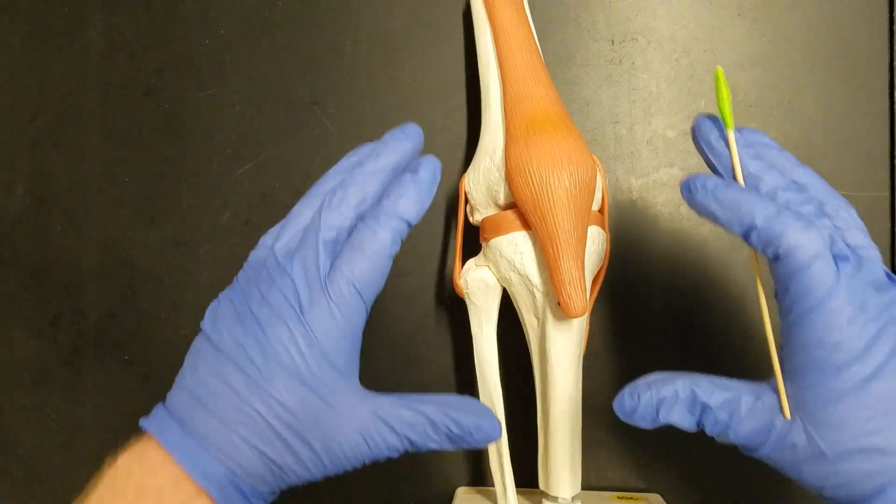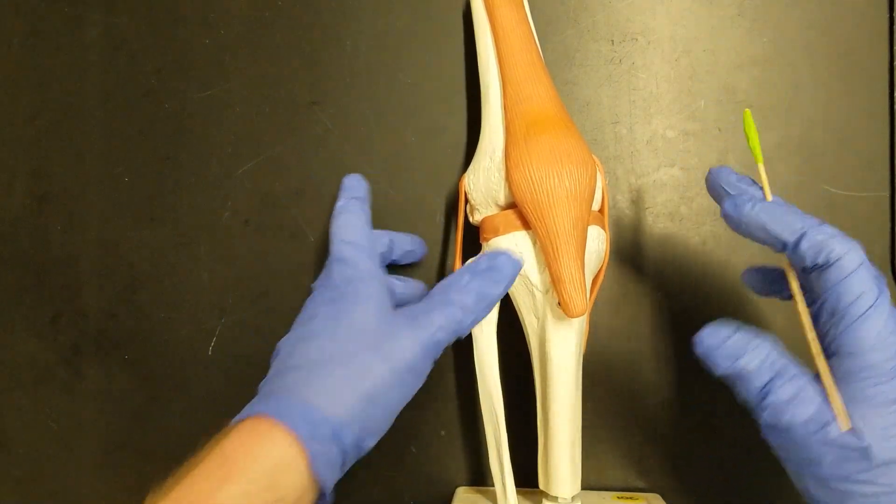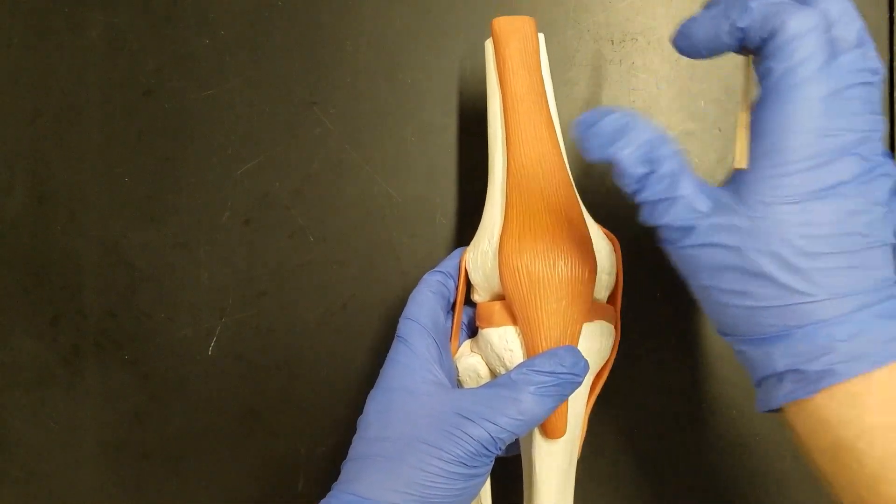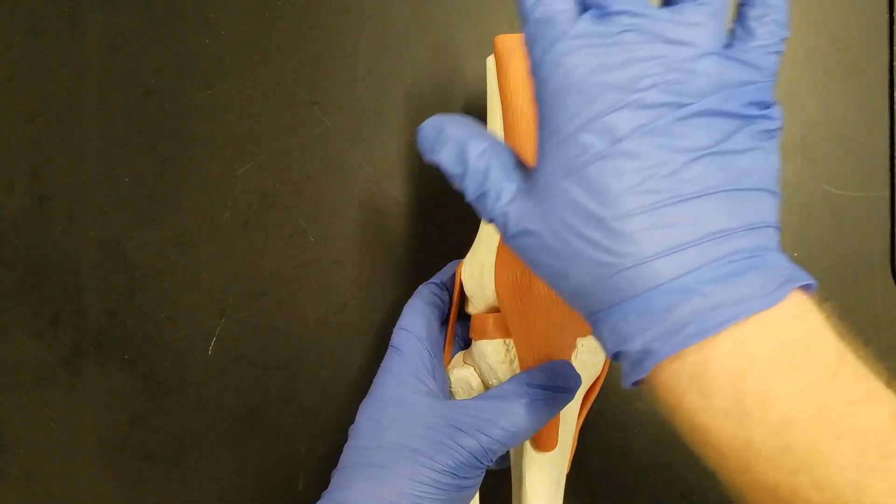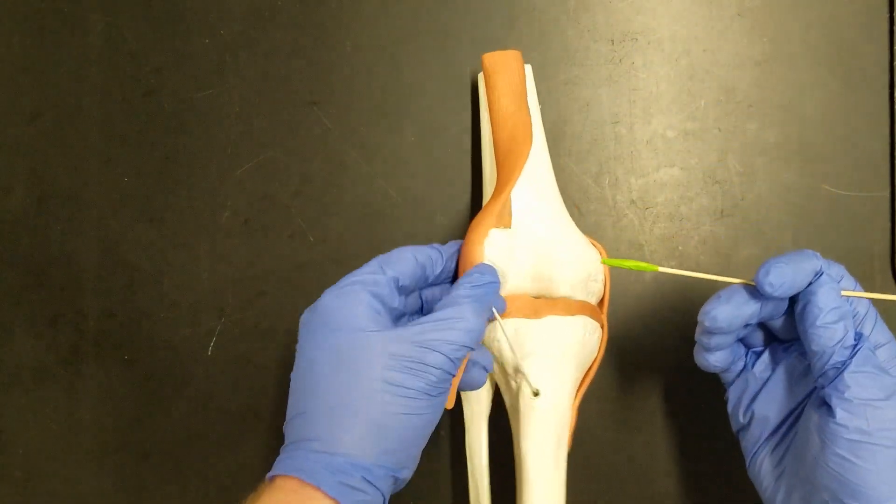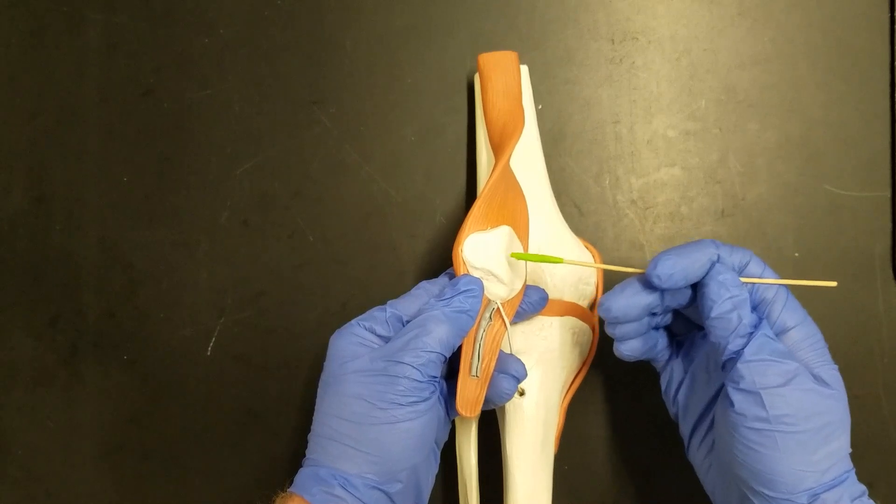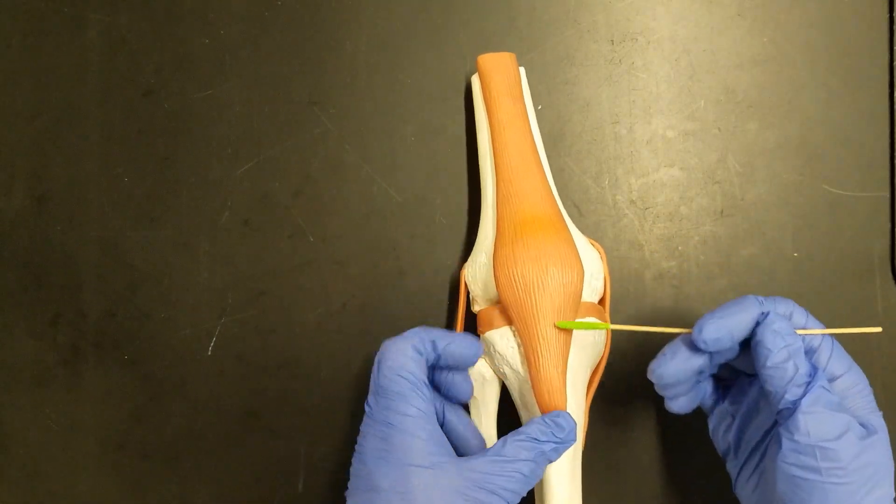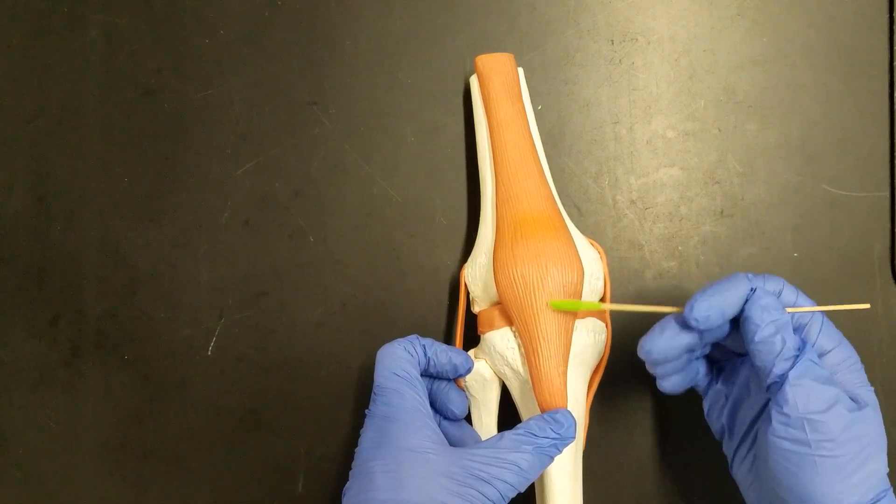In this video we're going to be looking at the structures of the knee. Here we can see our quadriceps tendon coming down. That's the four large muscles in the anterior thigh. Their tendon is going to circle around the patella, which is this bone here, and then from the patella down to our tibial tuberosity we have the patellar ligament.